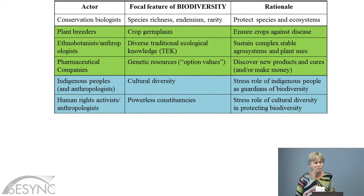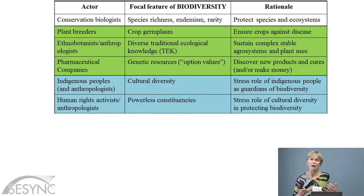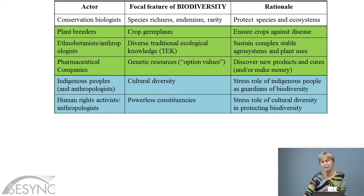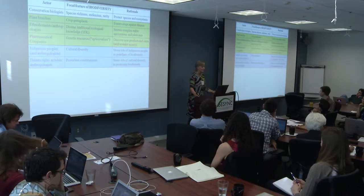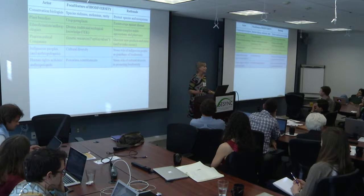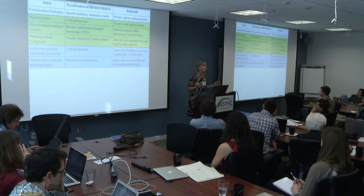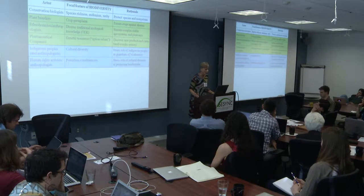Indigenous people, with anthropologists often with them, very much emphasize links between biodiversity and cultural diversity, stressing the role of indigenous people as guardians of biodiversity. Human rights activists, again often anthropologists, would focus on powerless constituencies—often called forest people or people living in remote areas—who were living in areas of high biodiversity and were seen as important guardians of these areas.